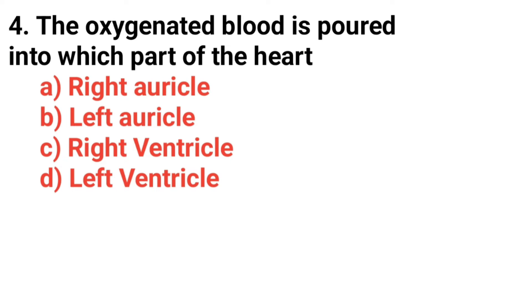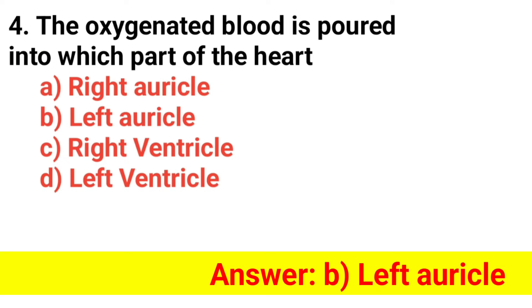Question 4. The oxygenated blood is poured into which part of the heart? The answer is option B — Left auricle.